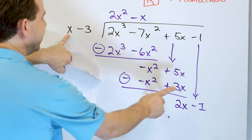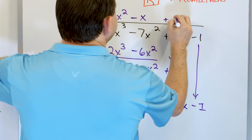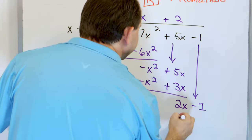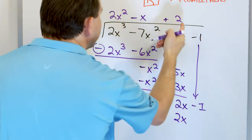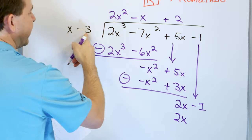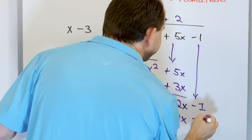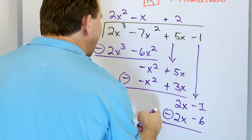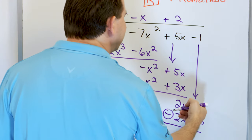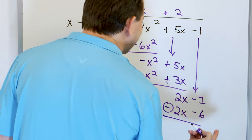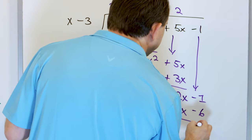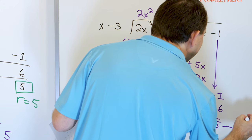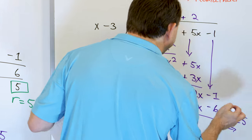x times something gives me 2x — it has to be a 2. Multiply to get 2x. 2 times negative 3 gives me negative 6. I subtract: negative 1 minus a negative 6 means negative 1 plus 6, which gives me 5. And that's exactly what we said — the remainder had to be equal to 5.